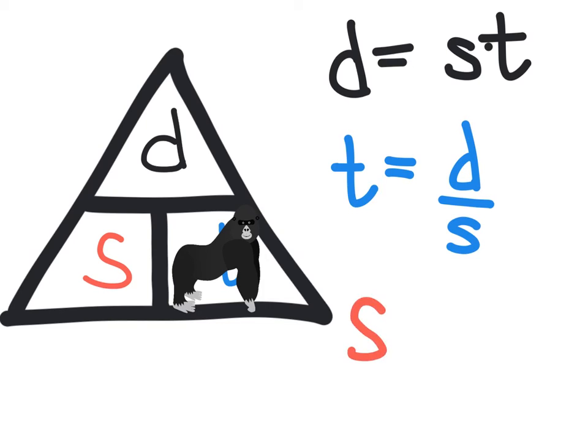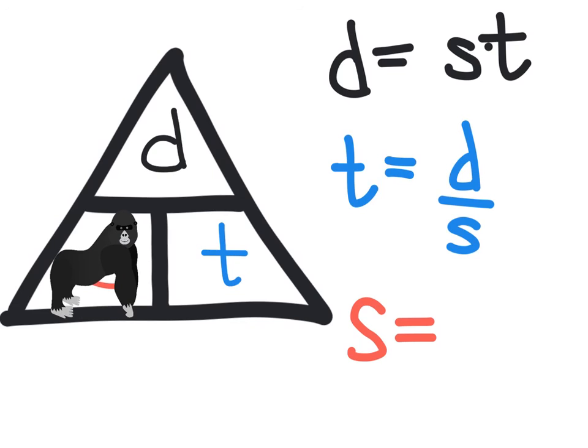S equals—we're looking for speed, so place your hand over that variable, and rewrite exactly what you see. Distance over time. Again, this final formula can read speed equals distance divided by time.